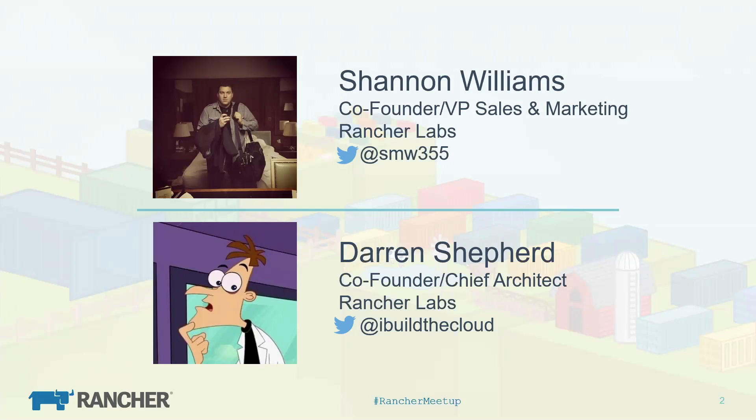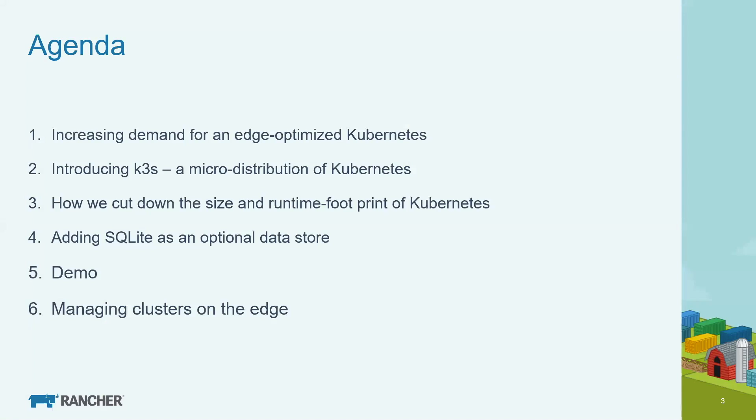I'm Shannon Williams, one of the founders of Rancher. I run all of our customer-facing activities — sales, marketing, and the likes. Darren is my co-founder; he is the chief architect and lead engineer on everything we build at Rancher. For those of you who don't know who Rancher is, we're an open-source software company. We basically build open-source projects and commercialize those. Our most famous one is called Rancher, which is a management platform for containers and Kubernetes.